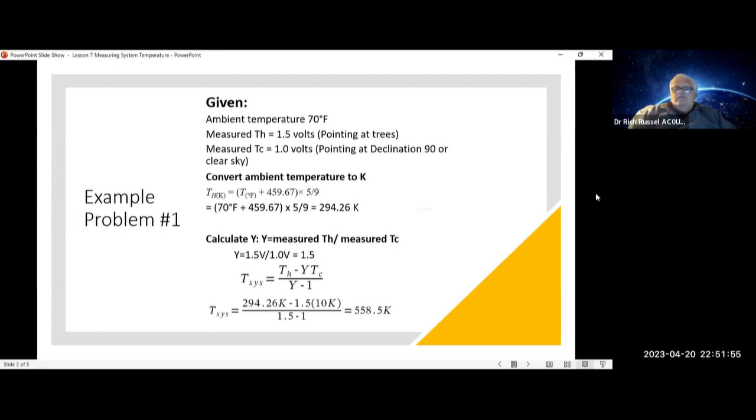First, convert your ambient temperature to Kelvin. Note also if you're in centigrade, you still need to convert it to Kelvin. Now you calculate your y-value. The y-value is equal to your measured T-Hot over your measured T-Cold. Here it's 1.5.